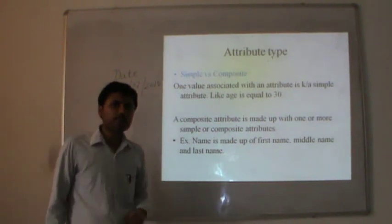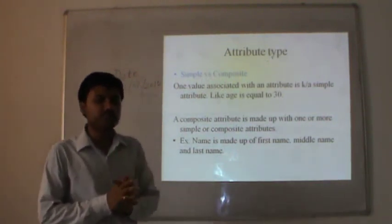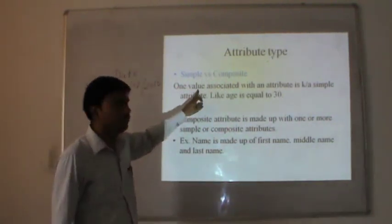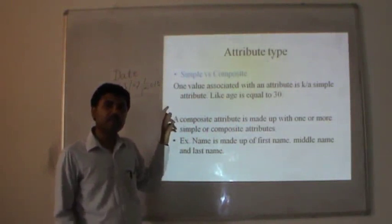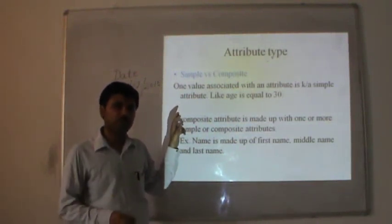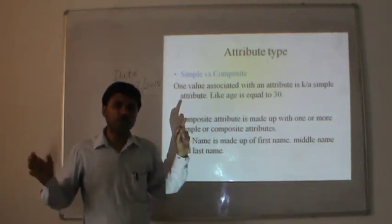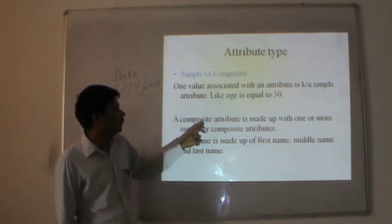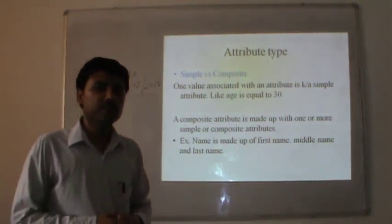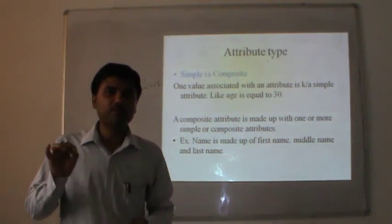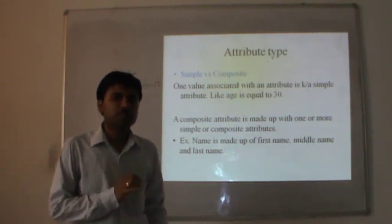There are different types of attributes. First is simple: one value associated with an attribute is known as a simple attribute — like my age is 30. Age is an attribute and its value is a simple value. Composite attribute is made up of one or more simple or composite attributes — for example, in many countries names are referred to with first name, middle name, and last name. This is a very good example of composite attributes.